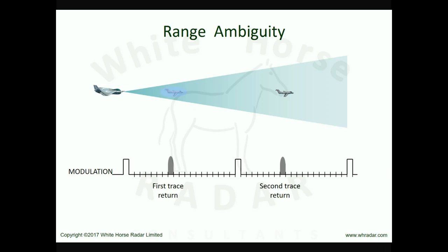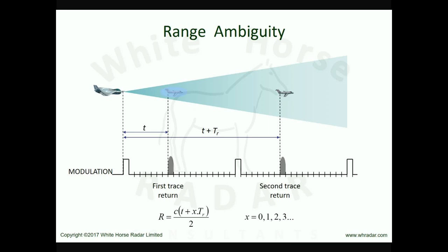Of course, if the radar has the detection range, it may be possible to detect even more distant targets as third, fourth, or higher order trace returns. But the radar is aware only of a return having an apparent delay time T, and does not know that the true delay time is in fact T plus TR — where TR is the time between pulses. All of which means there could be multiple solutions for the range, corresponding to multiple possible delay times. This is range ambiguity.